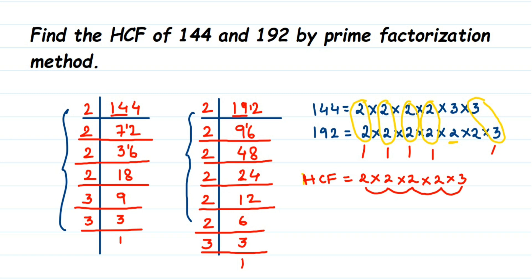So the HCF of 144 and 192 is 48. I hope this question is clear — how to find the HCF of any two numbers using the prime factorization method. If you have any other questions or doubts, drop a comment and I'll try to make a video on it. Thank you so much for watching.